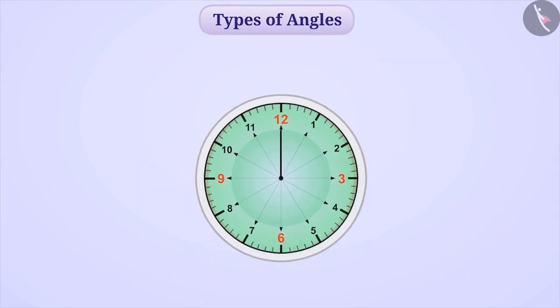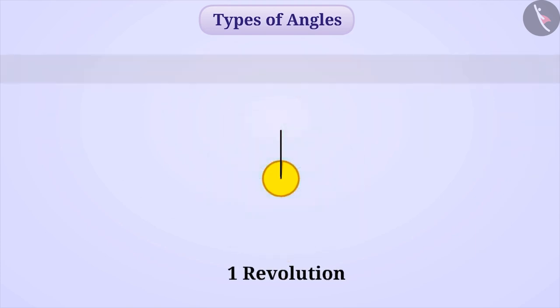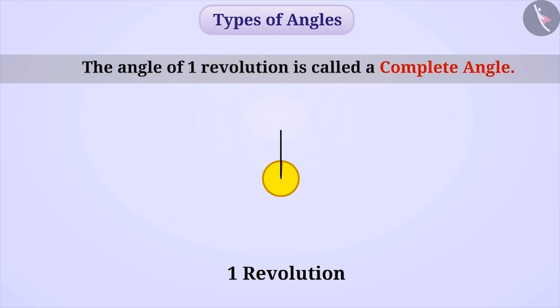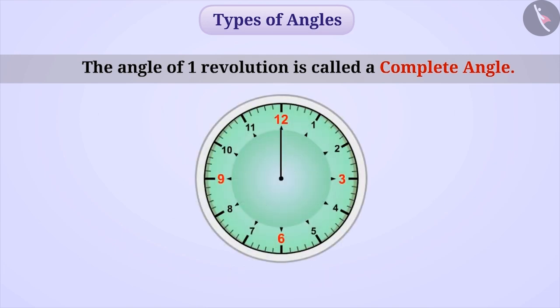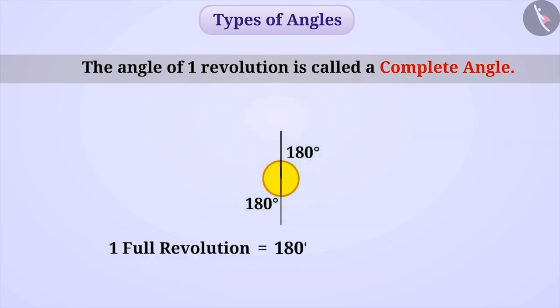Now consider that both the hands of the clock are in the same position. If we keep one hand in the same position and move the other to complete one circle, then we complete a circle and it is called a revolution. The angle of a revolution is called a complete angle. We can see that to complete one circle, the hand moves from 12 to 6 which means it makes an angle of 180 degrees. In the same way, moving from 6 to 12 means again making another 180 degrees. Therefore, we can say that during one complete revolution, angle is made 180 degrees plus 180 degrees which is equal to 360 degrees.